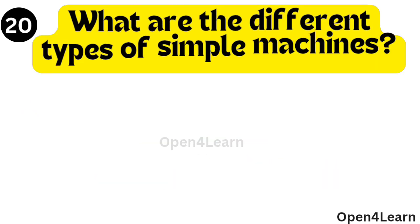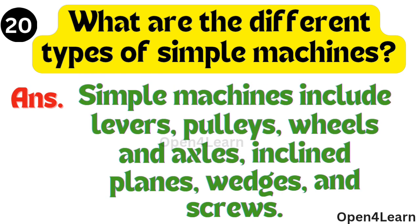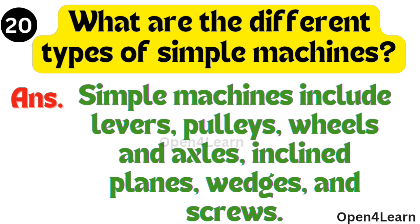Question, what are the different types of simple machines? Answer, simple machines include levers, pulleys, wheels and axles, inclined planes, wedges and screws.